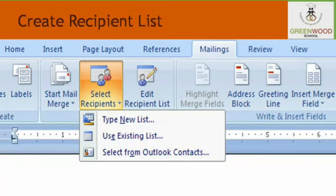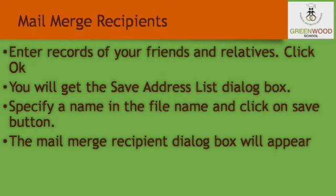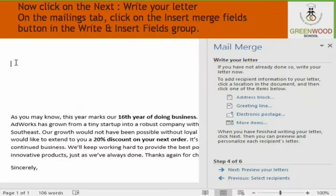To create a recipient list, you can browse from an existing list, or if you want to type a new list, click on the Type a New List radio button. The New Address List dialog box appears. Enter data in the respective fields and click the New Entry button. Enter records of your friends and relatives, then click OK. You will get the Save Address List dialog box — specify a name for the file and click Save. The Mail Merge Recipients dialog box will appear. Now click Next Write Your Letter under Step 3 of 6 section.